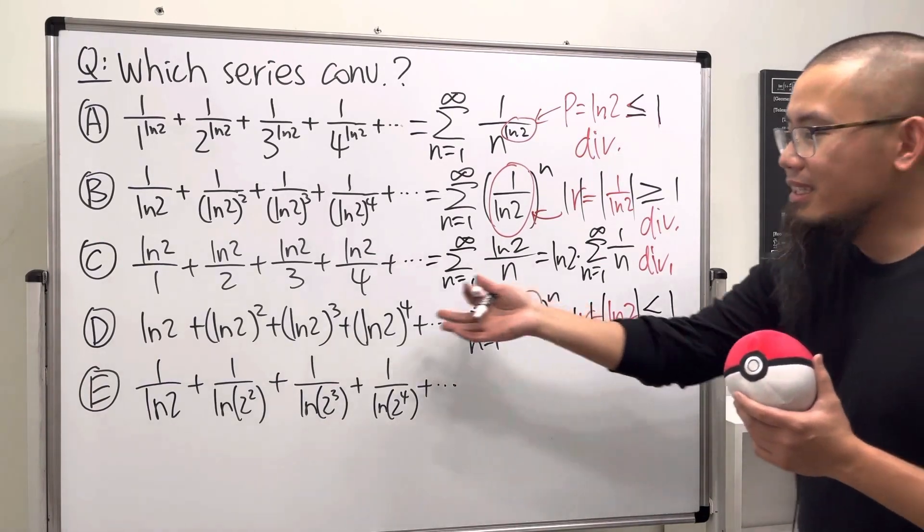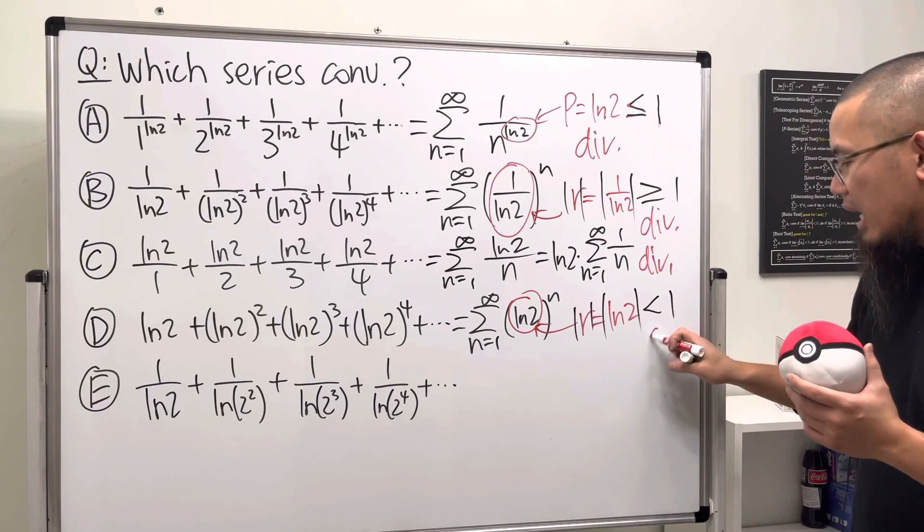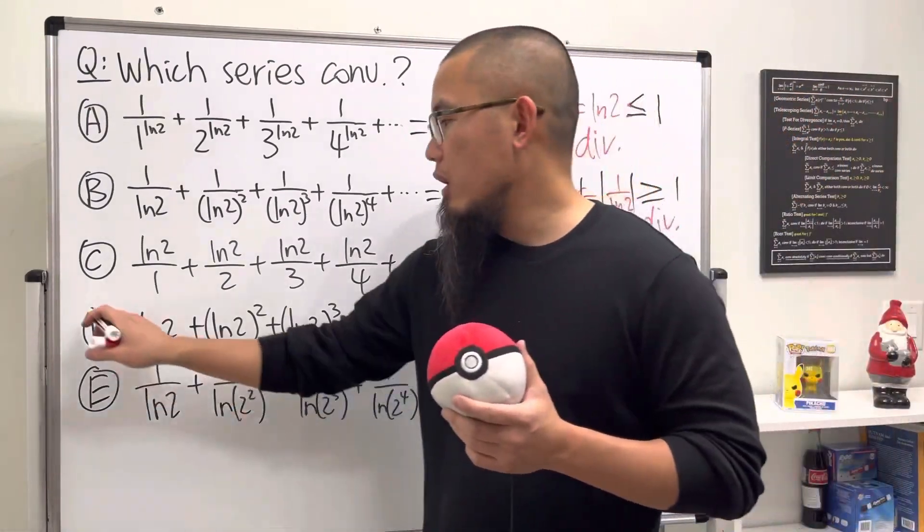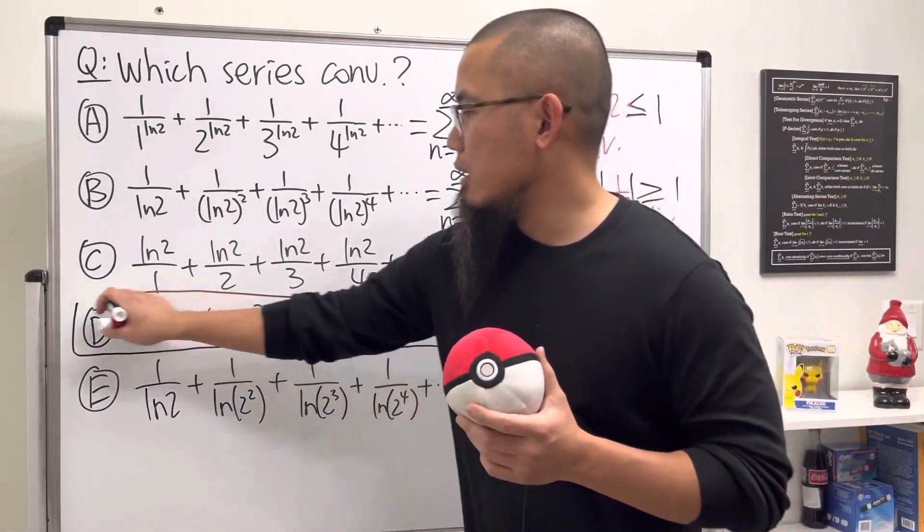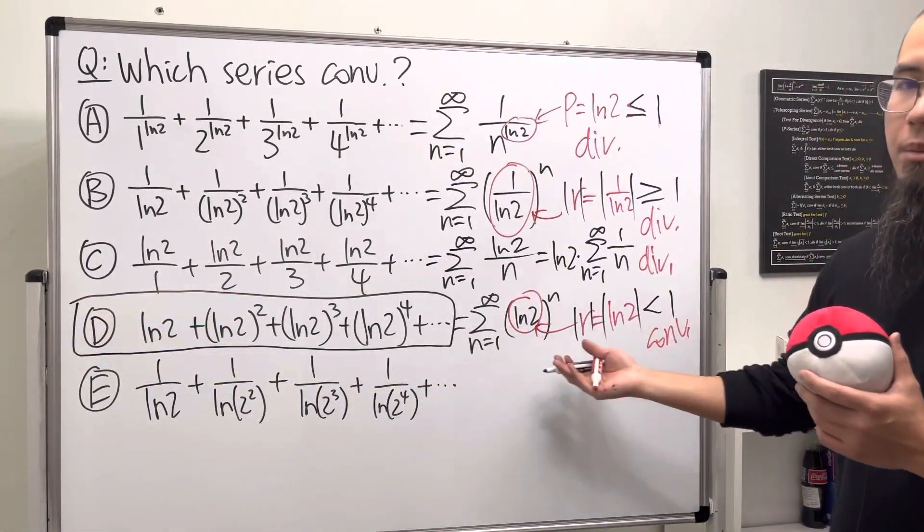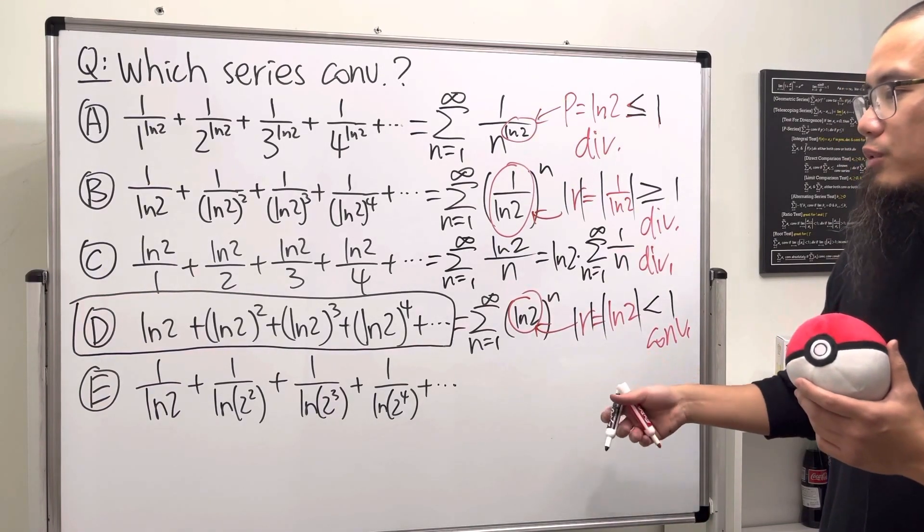But if you take a look at the absolute value of this, this right here is less than one. So in fact, this is the one that actually converges, because whenever the absolute value of the r is less than one, then that geometric series converges. And we also know that it converges to—well, put that down at the end.